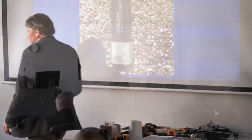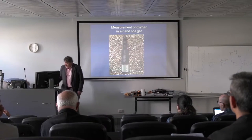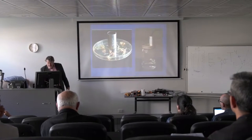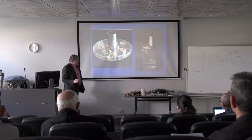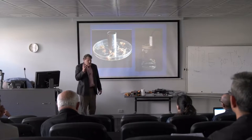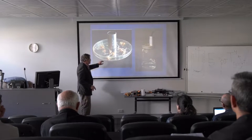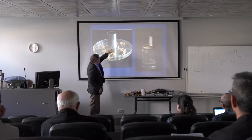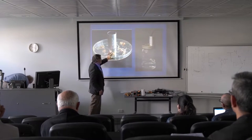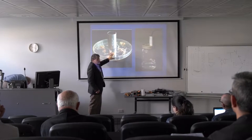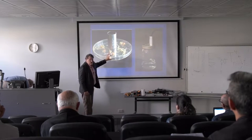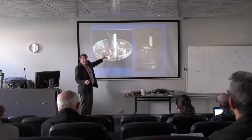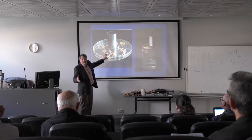Here are a couple of example pictures of applications. Here's one in the lab — we've used this quite a bit. Here's a Petri dish, sealed, with a tiny hole drilled and the sensor tip inserted. We're measuring the change in oxygen in this Petri dish, which is an indication of the metabolic rate of the seeds inside.